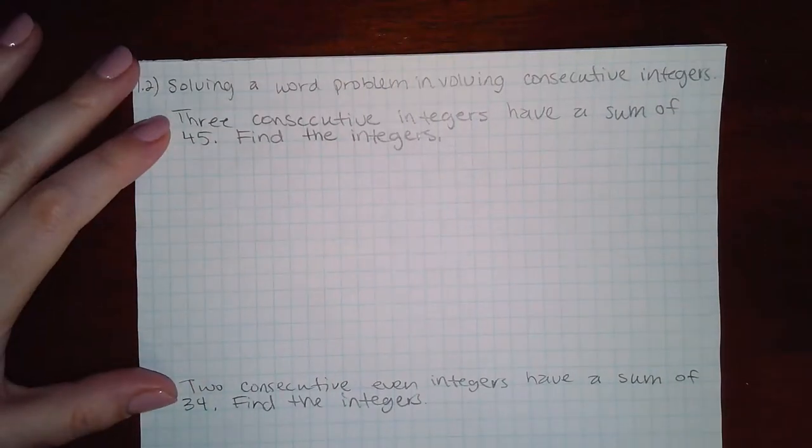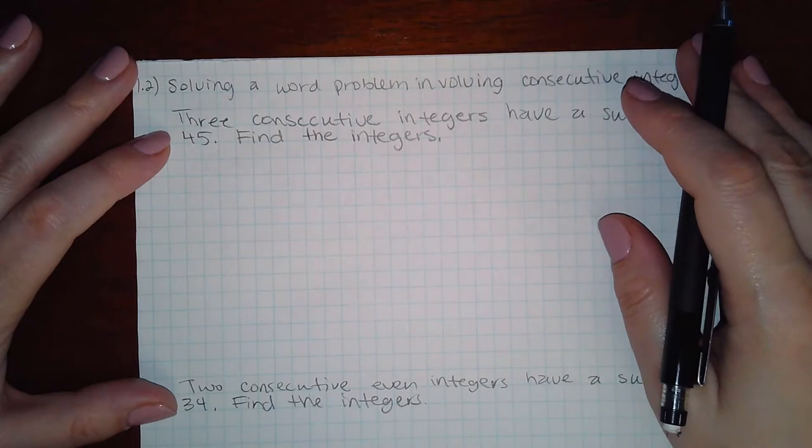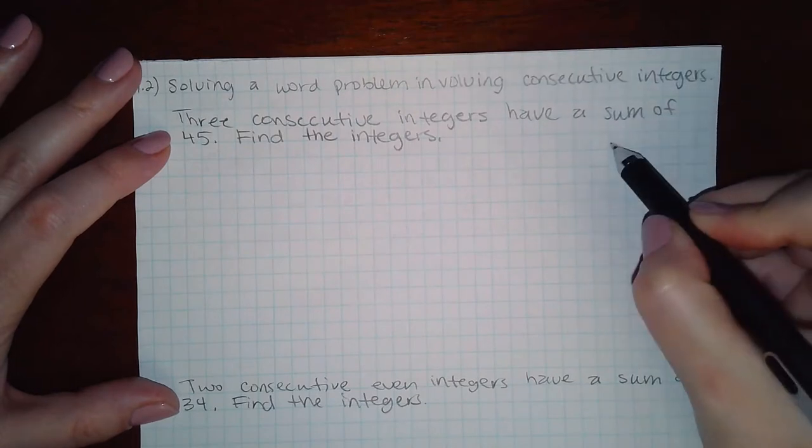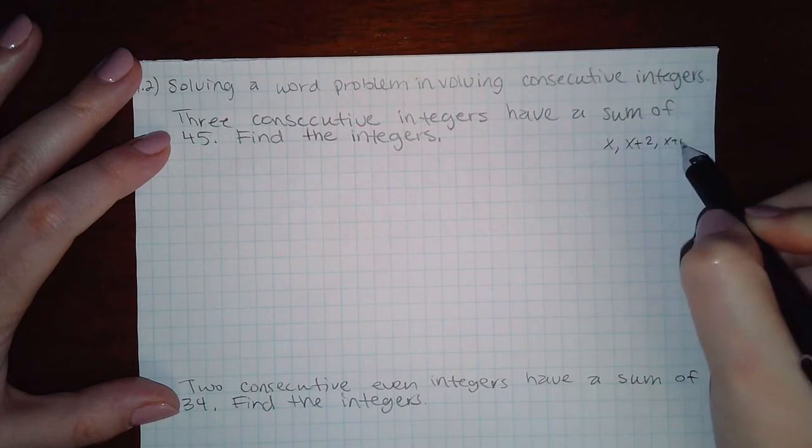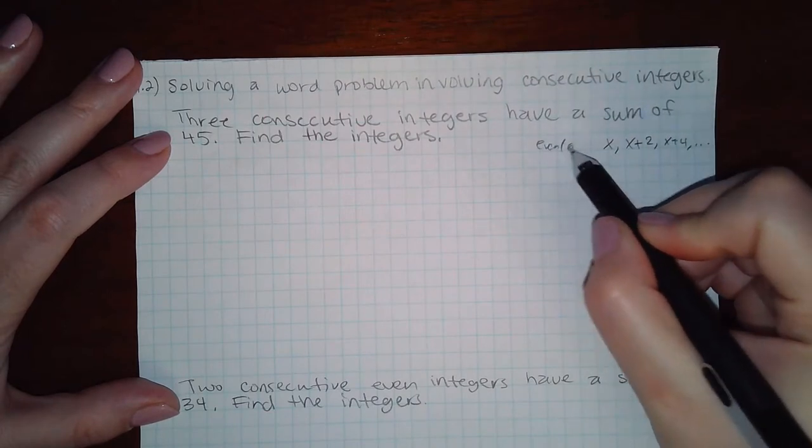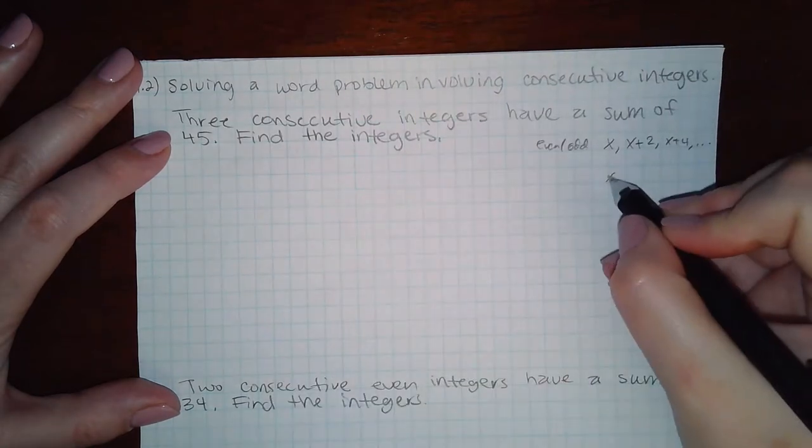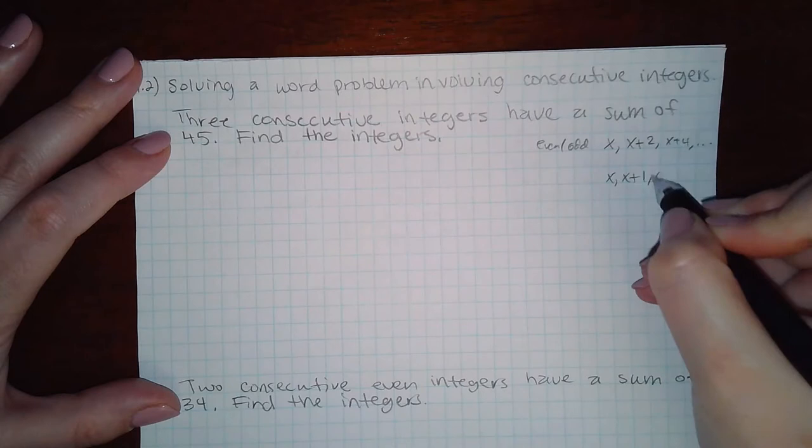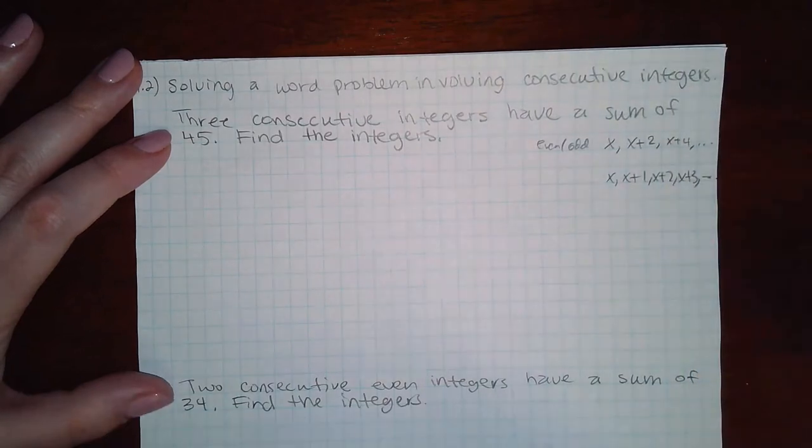Here we are solving a word problem involving consecutive integers. In a previous video we discussed consecutive integers. For even and odd consecutives you have x, x plus 2, x plus 4, and so forth. For regular consecutives it's x, x plus 1, x plus 2, x plus 3, and so forth.